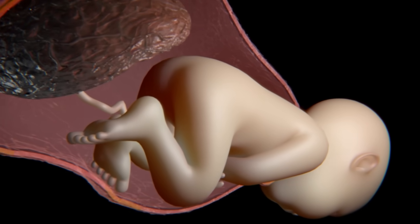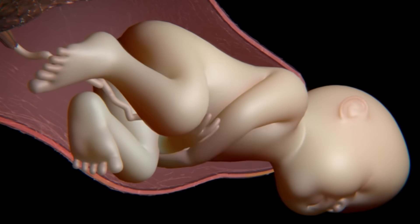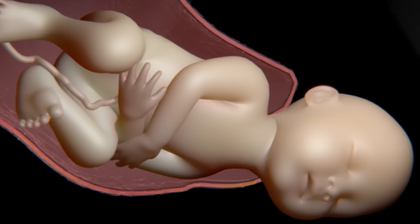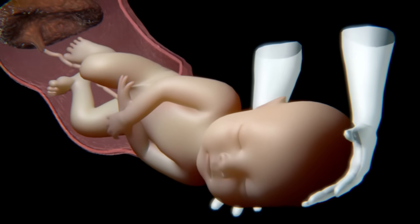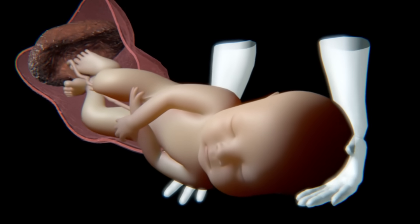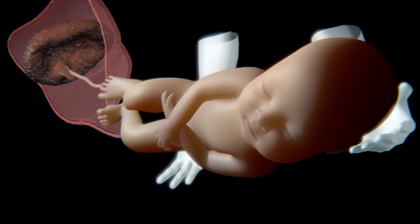After the baby's head comes out of the vulva, he or she will rotate their shoulders to pass through the birth canal. The baby's shoulders pass one after the other to be able to cross through the pelvis. Once these are expelled, the rest of the baby's body will come out easily.